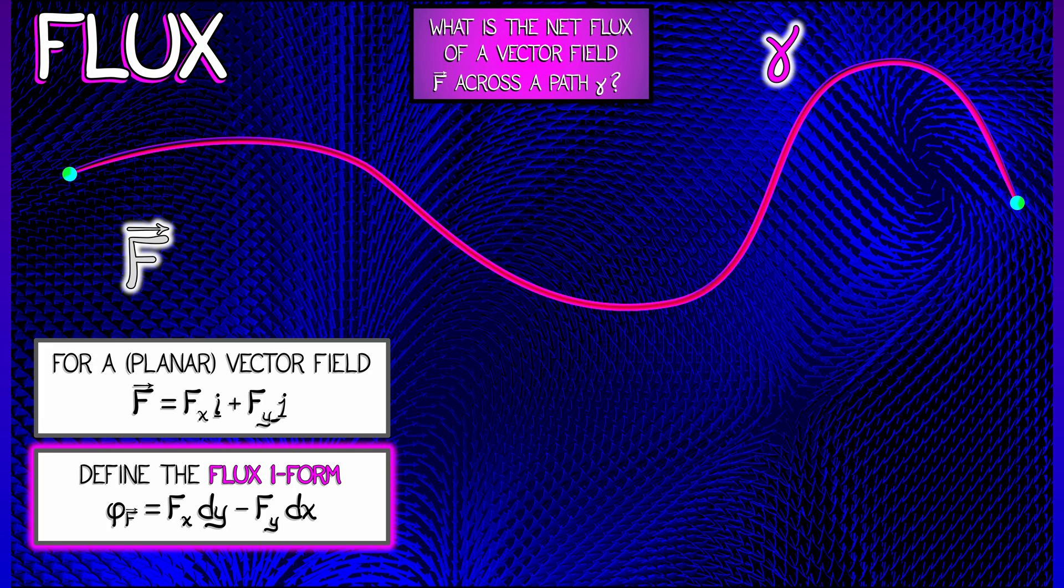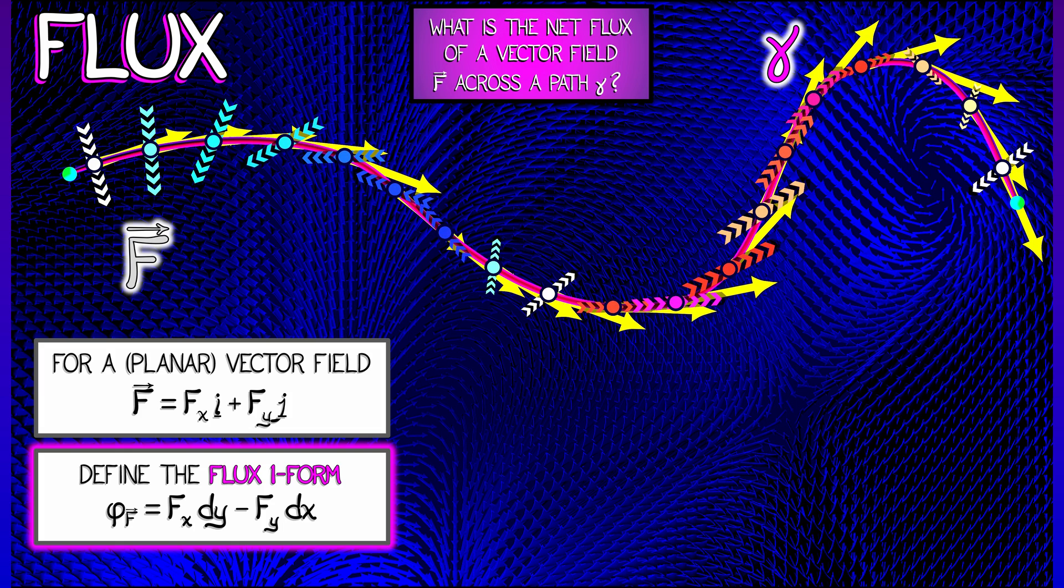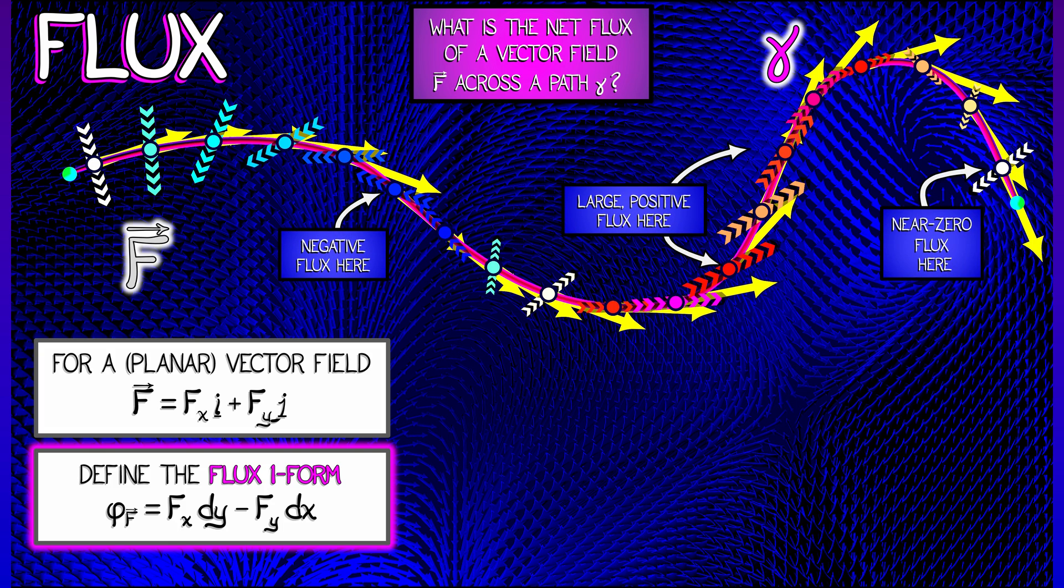Given your vector field and path, this one-form takes in a tangent vector to your path and says how much the vector field is going across that tangent direction. When the vector field and path are perfectly aligned, you've got zero flux. When the vector field crosses from left to right, that's positive flux. When it crosses from right to left, that's negative flux.